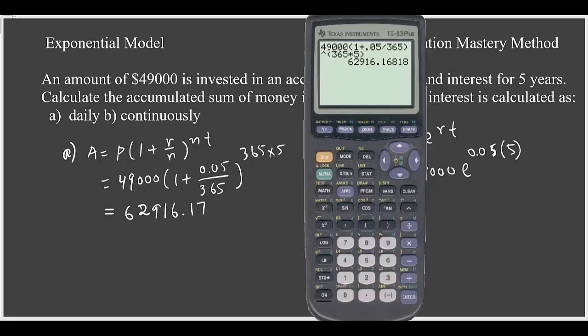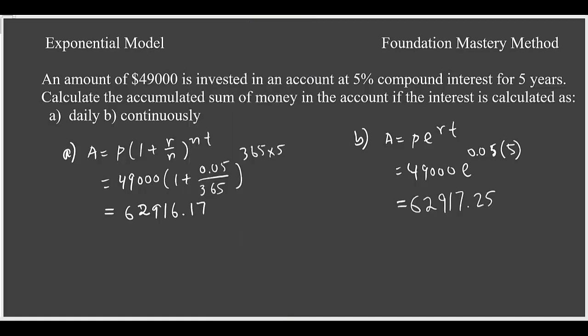Now we'll check what happens with continuous compounding. So let me type: I have 49,000 times e to the 0.05 times 5. Enter. So I get this amount. So now you can compare the results: the daily compounding giving you $62,916.17, but continuous compounding still gives you a little more, $62,917.25.